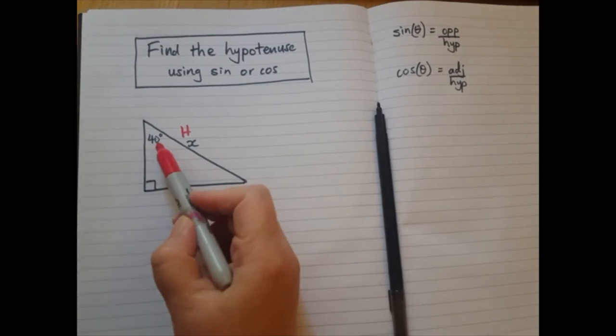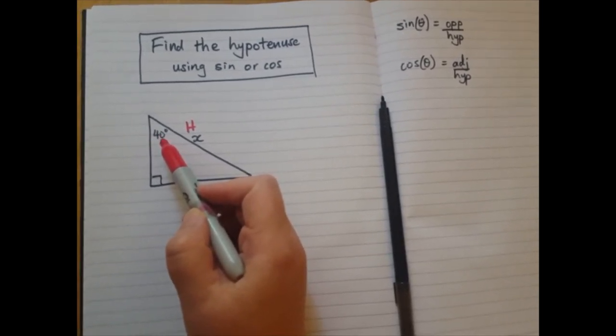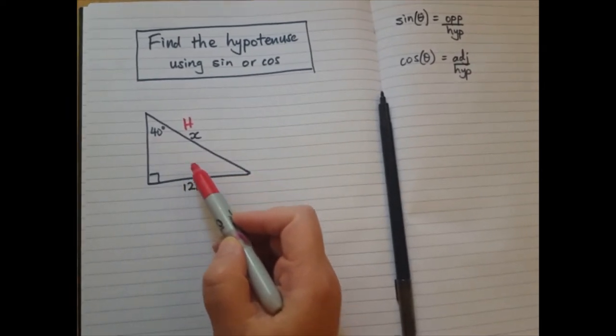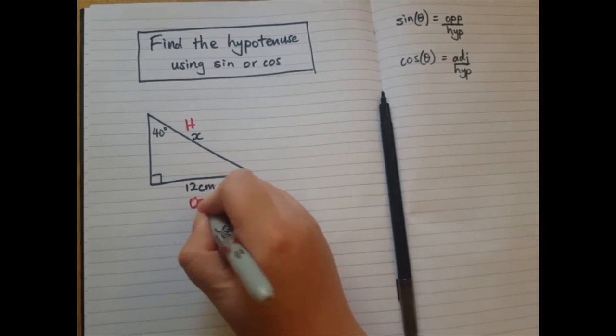Next, here is my angle that I care about, the 40 degrees. The side which is opposite this angle is this one, 12. So I'm going to label this opposite.